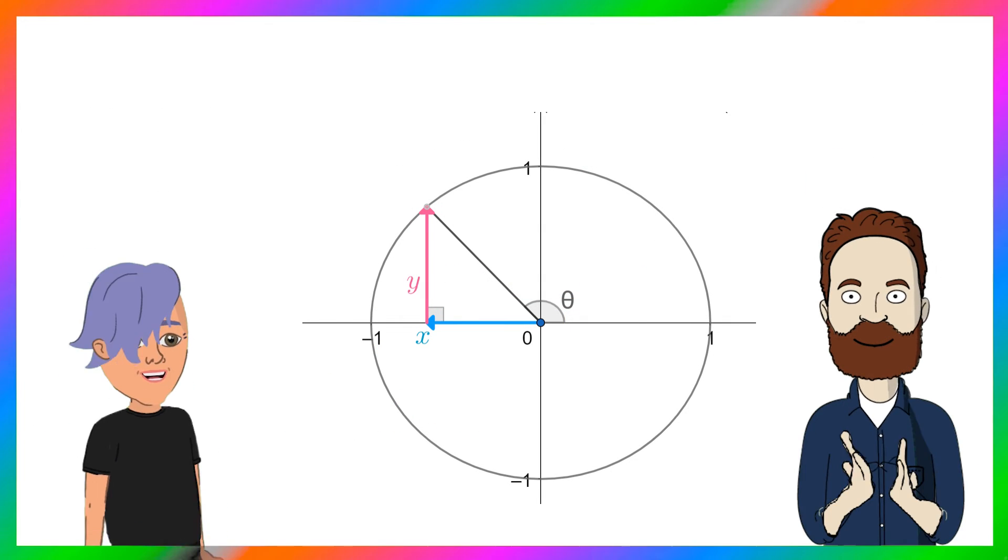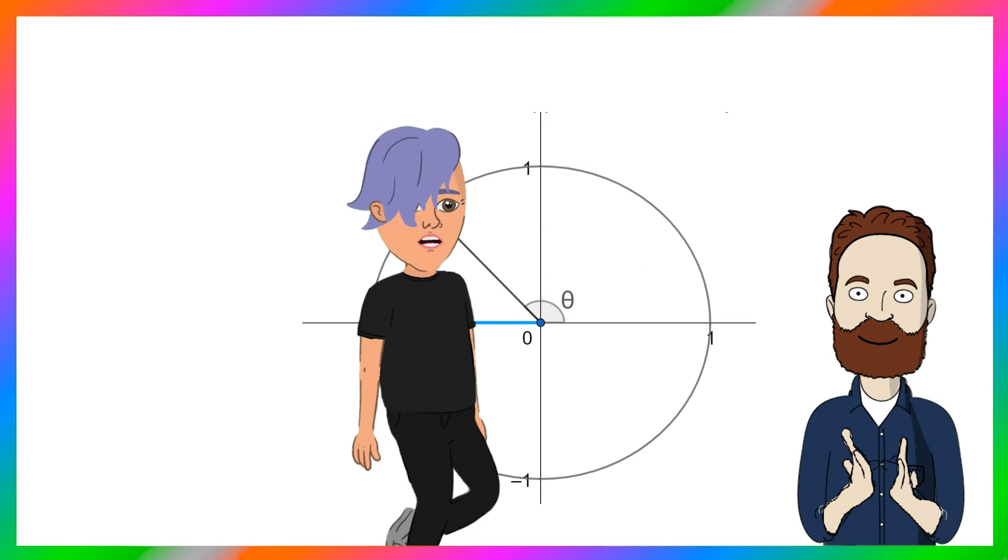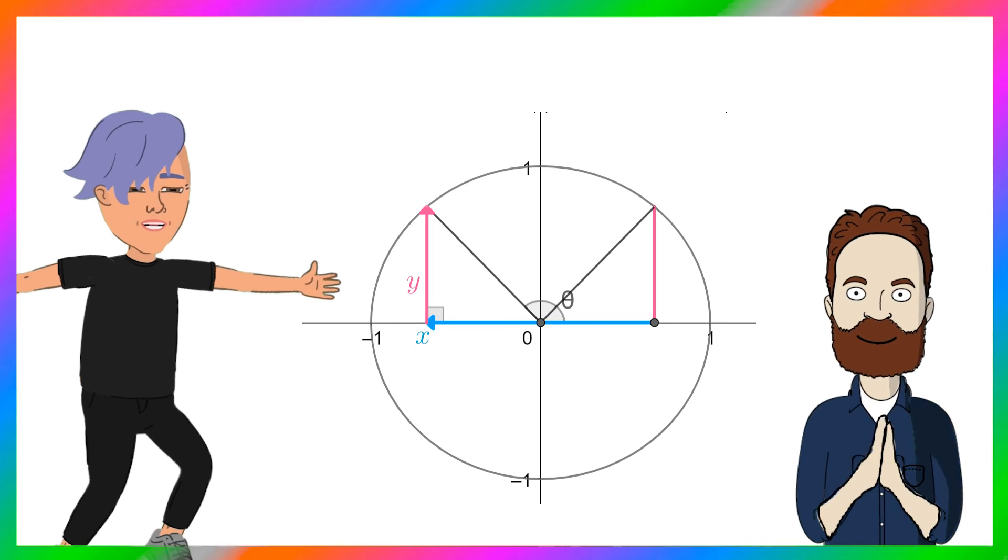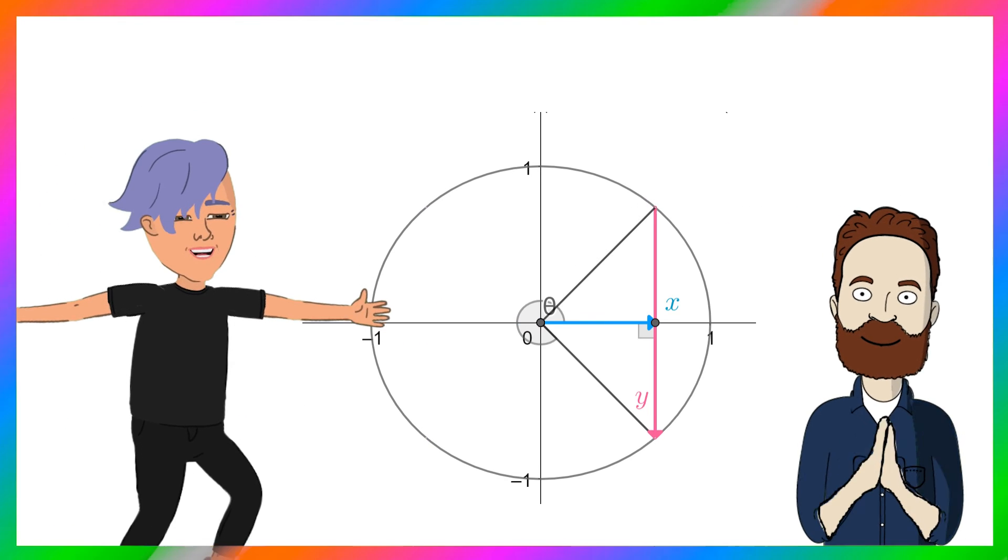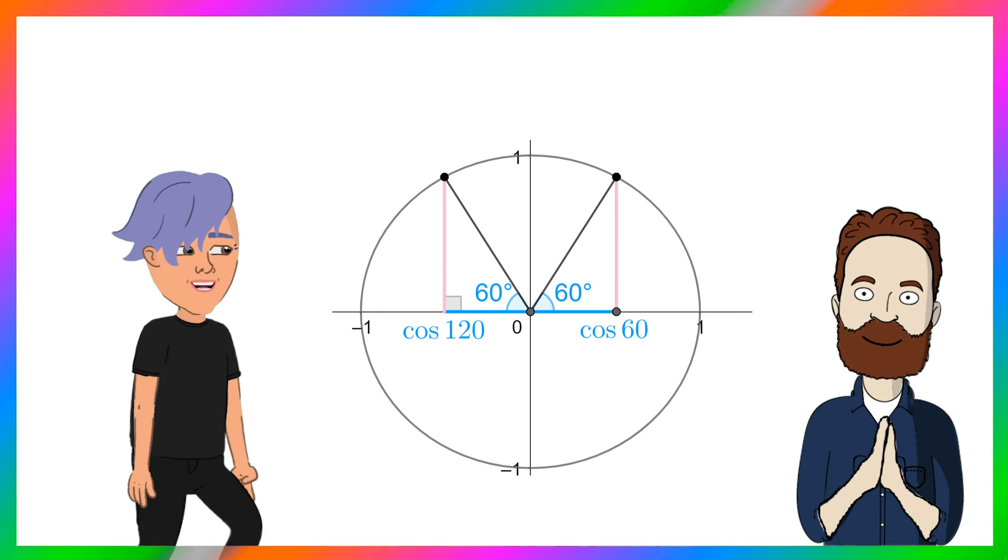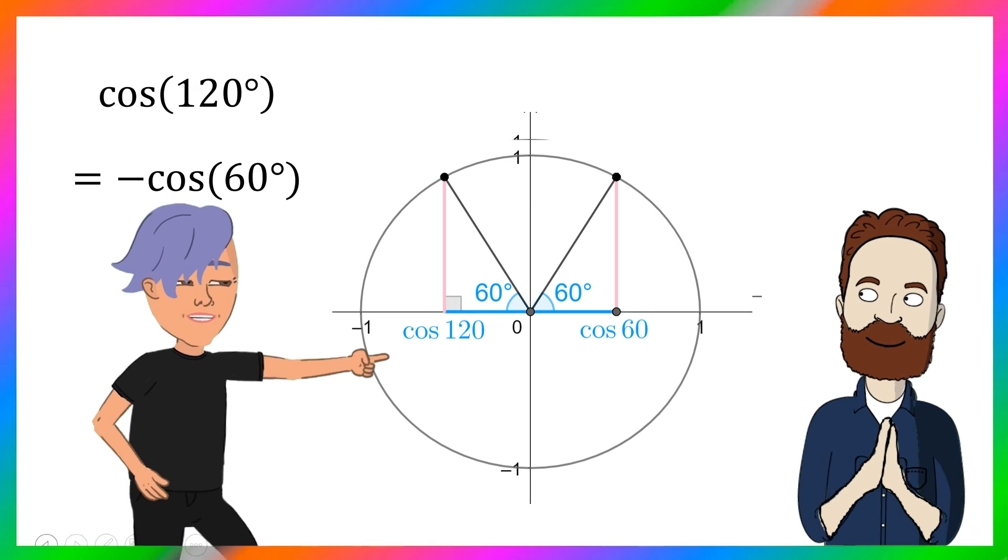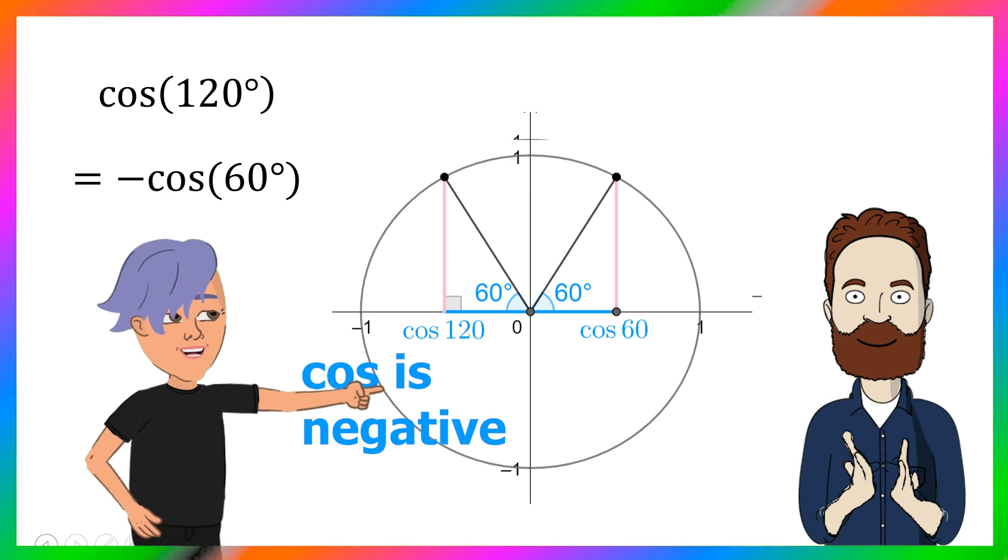So wake me up to trigonometry, using unit circle symmetry. Cosine 120 degrees is like 60 degrees, except that it is negative.